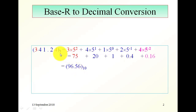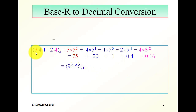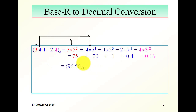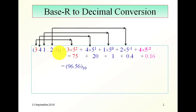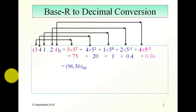In this example, we are required to convert from base 5 into decimal. Again, this number has a value, which is 3 multiplied by the weight, which is 5 squared. This number's value is 4 by 5, which is 20. This number's value is 1 multiplied by the weight, which is 5 to the power of 0. Then we add the values and get the final result.